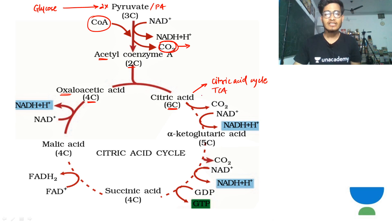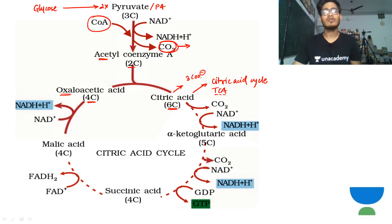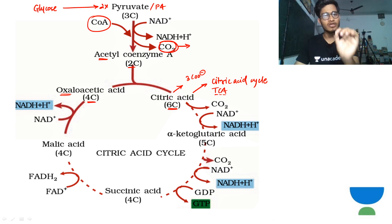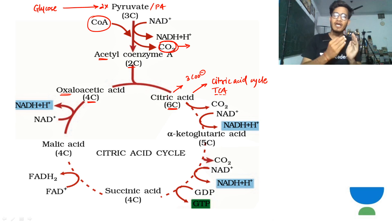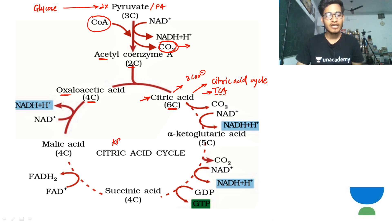The cycle is also called TCA - tri-carboxylic acid cycle. 'Tri' means 3 carboxylic acid functional groups. In citric acid, there are 3 carboxylate groups present - that's why it is also called the tri-carboxylic acid pathway. If you draw the structure of citric acid, you will find 3 COO groups. The cycle is named after this first product. It is called Kreb cycle because the discoverer's name was Krebs - hence Kreb cycle.